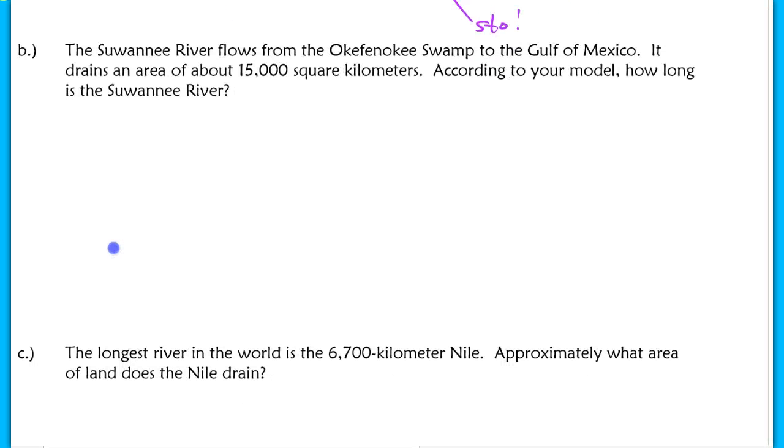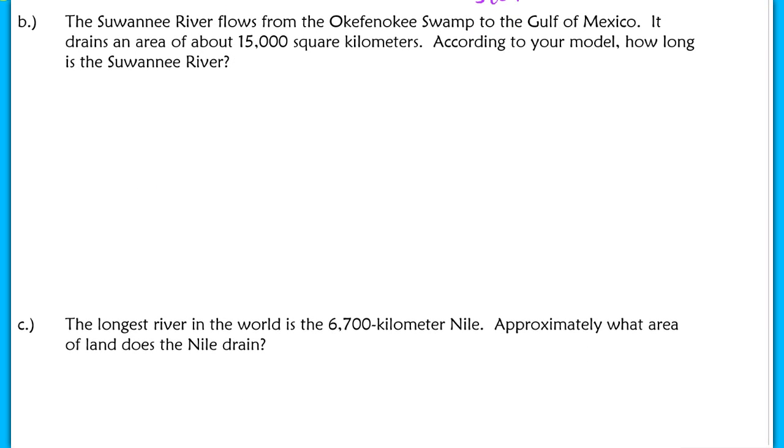To answer part B, it says the Suwannee River flows from the Okefenokee Swamp, I love saying that word, to the Gulf of Mexico. It drains an area of about 15,000 square kilometers. According to the model, how long is the Suwannee River? In this case, they're asking you to find a length, and you know the area. The area is 15,000 square kilometers. I'm going to let you try this one completely on your own, since this is just plugging it right into our function. Make sure you do have your stored value, and then you can go ahead and check with the key, and then we'll move on to part C.